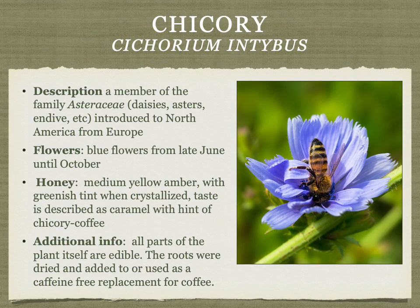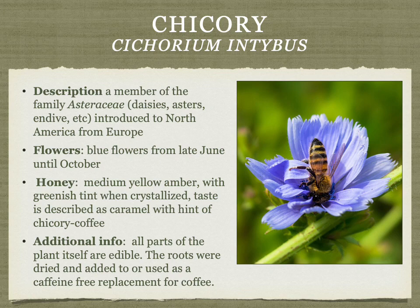Chicory is a member of the daisy family with beautiful blue summer flowers. The honey is medium yellow-amber with a greenish tint when crystallized and tastes like caramel — some describe chicory or coffee notes, though that hasn't come through personally. All parts of the plant are edible; the roots were historically dried and used to extend coffee or as a caffeine-free substitute during the Great Depression and World Wars.